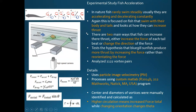Now let's look at an experimental study on fish acceleration and how fish can create more thrust as they swim. This is useful because in nature fish rarely swim steadily — they're usually accelerating forward then being pushed back, as we saw in the video with the marlin. There are two main ways fish can increase thrust: increase the force of each tail beat, or change the direction of the force if they're capable.